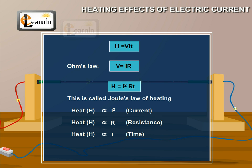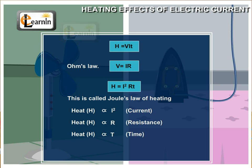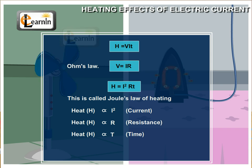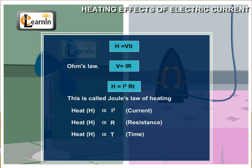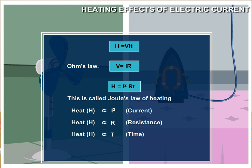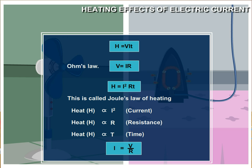In practical situations, when an electric appliance is connected to a known voltage source, the equation representing Joule's law of heating is used after calculating the current through it using the equation I = V/R.